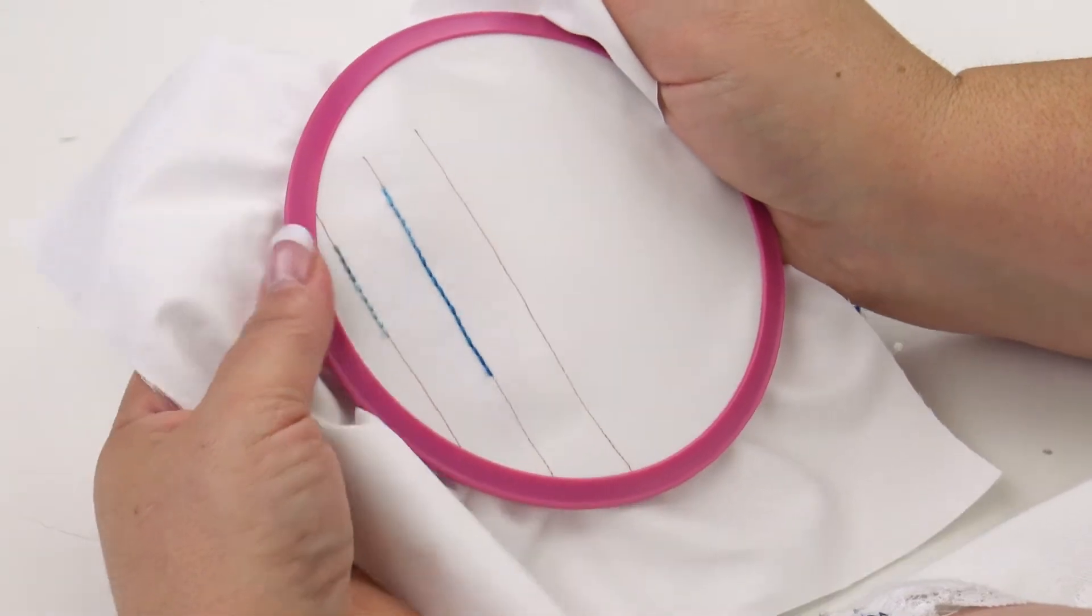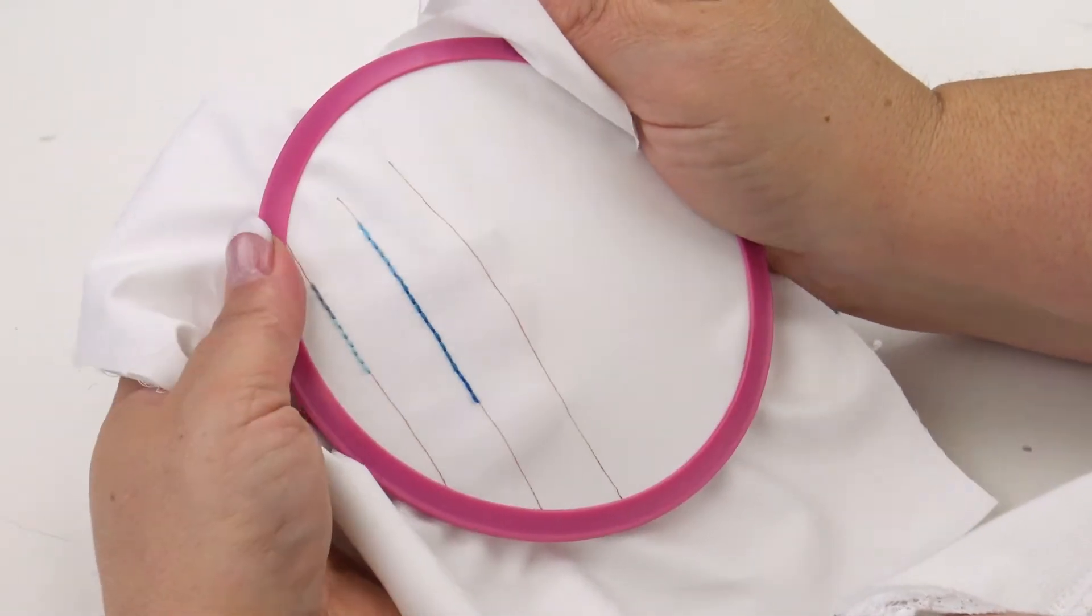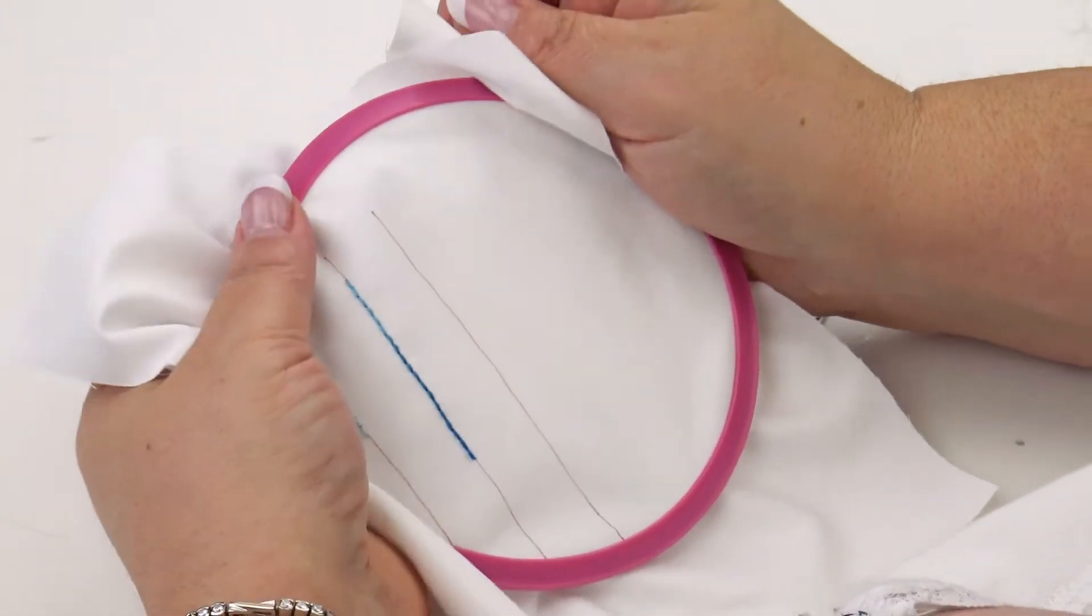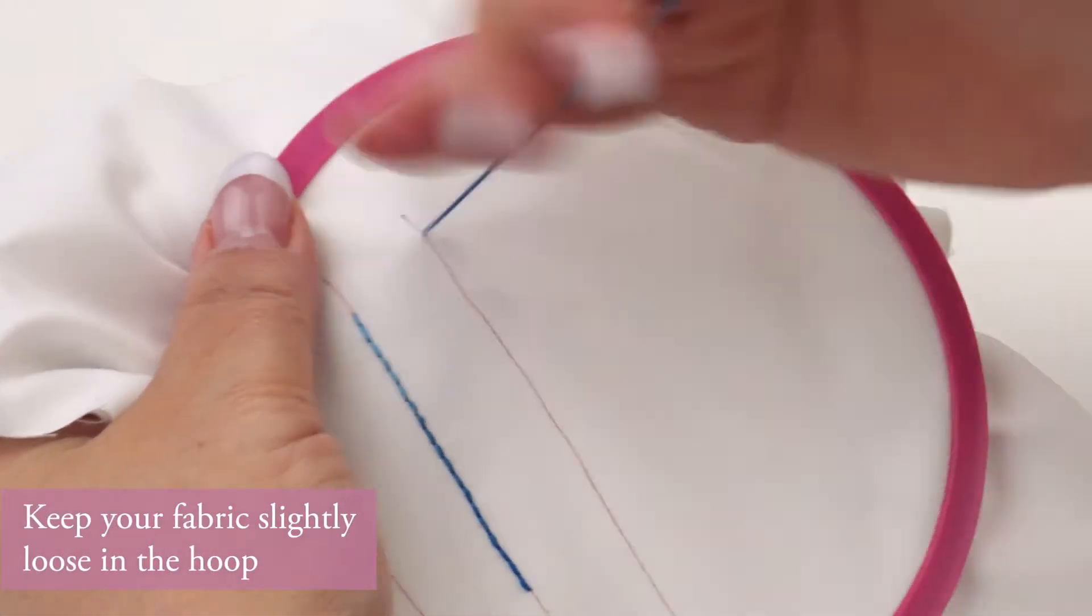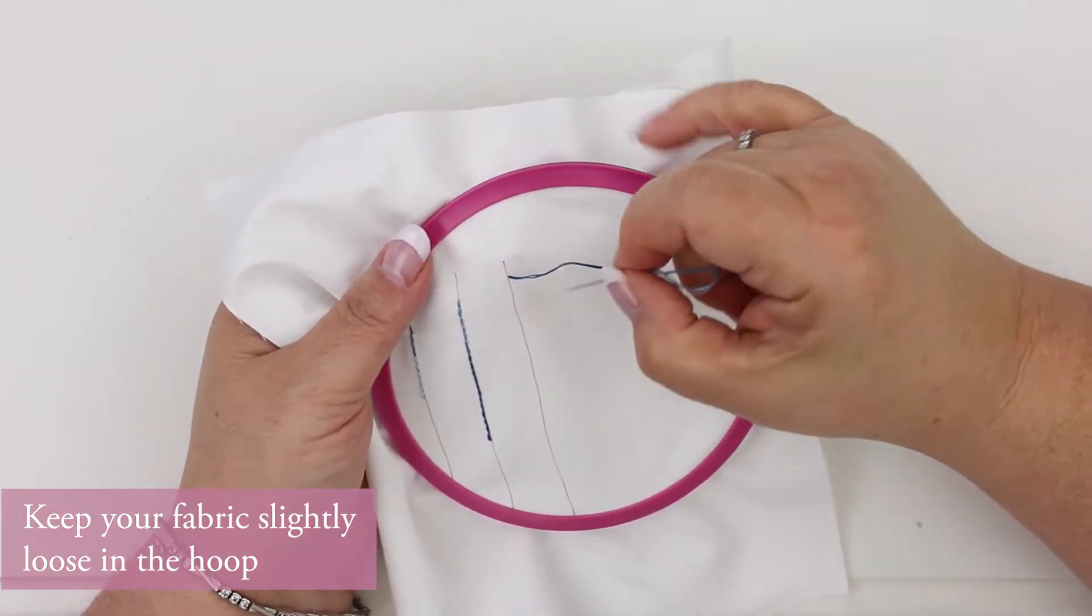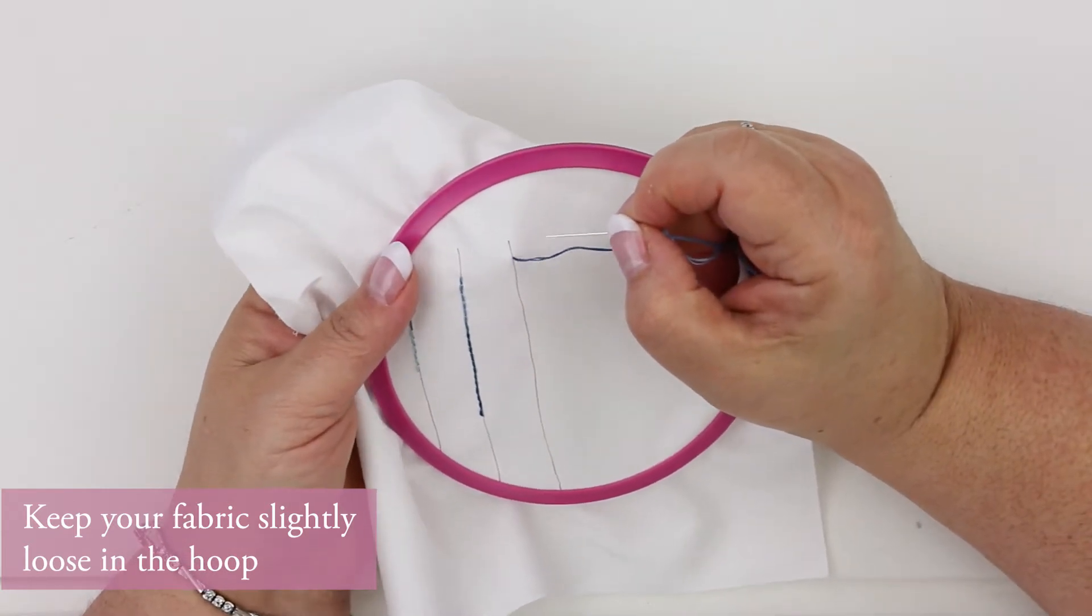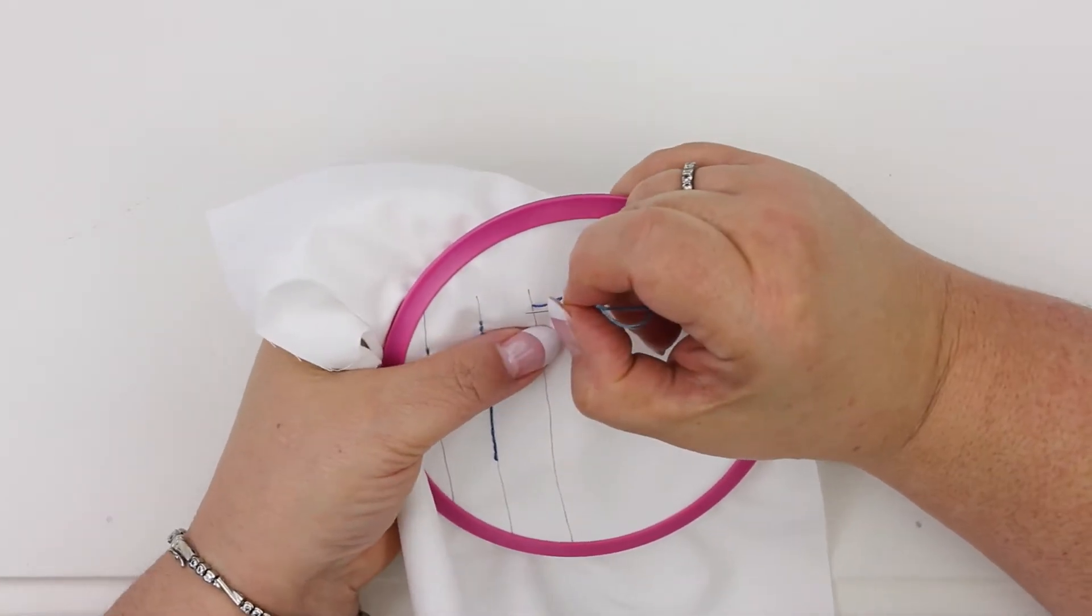but the best way to do it is to loosen your fabric up in the hoop a little tiny bit and then that way when you get this rocking motion going you can push up with your fingers on the back, push up on the needle.